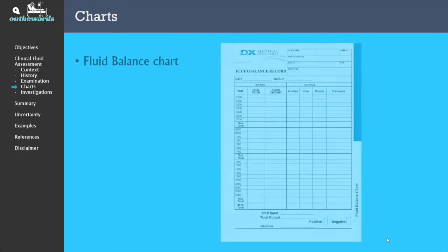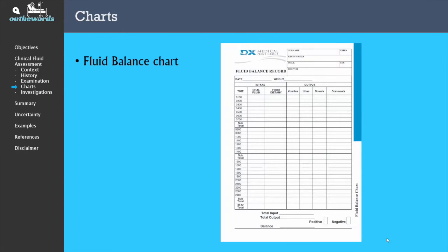In the ward setting, the bedside folder may contain a fluid balance chart. Since the kidneys are one of the most sensitive organs to changes in perfusion, urine output can also be used as a measure of intravascular volume. A weight chart may also be useful to track fluid levels over a period of a few days.